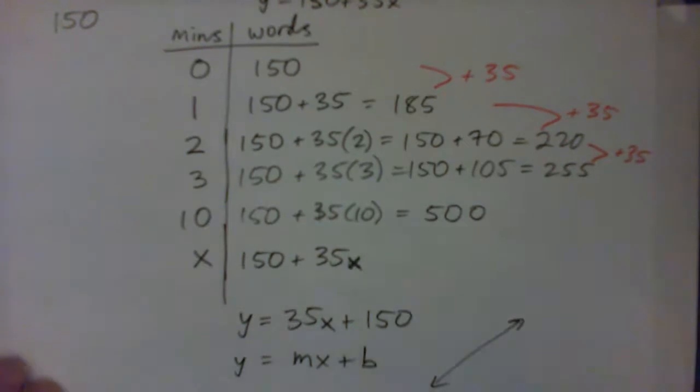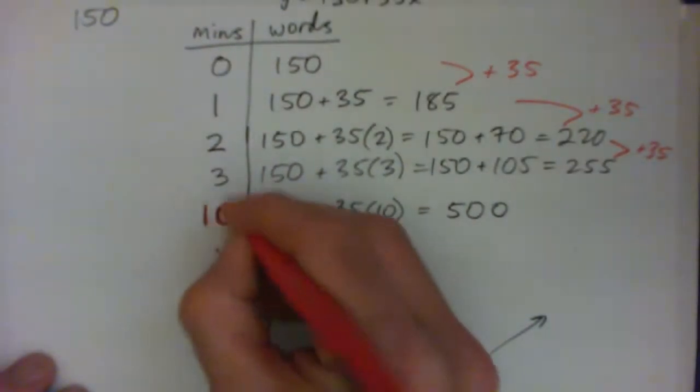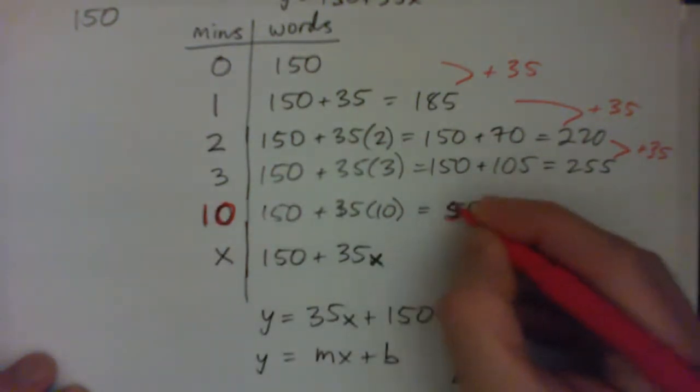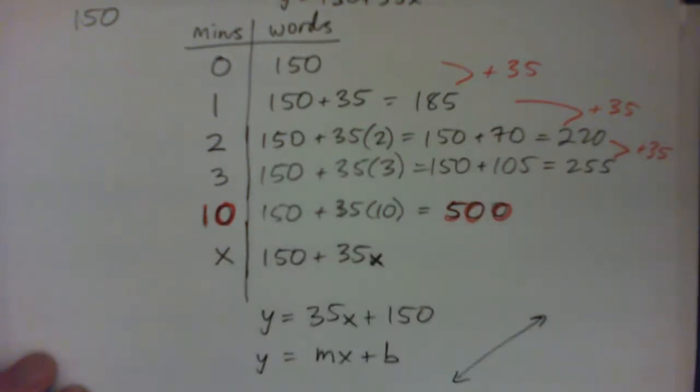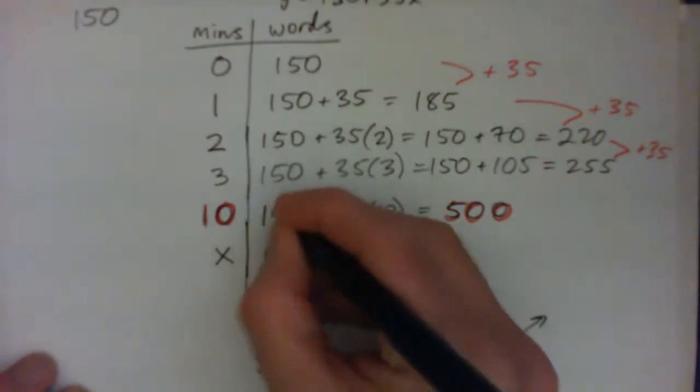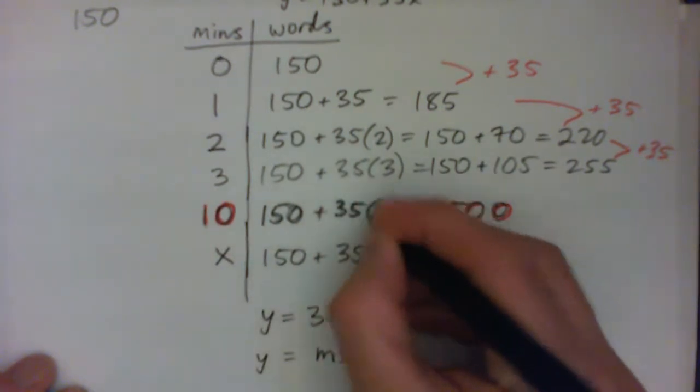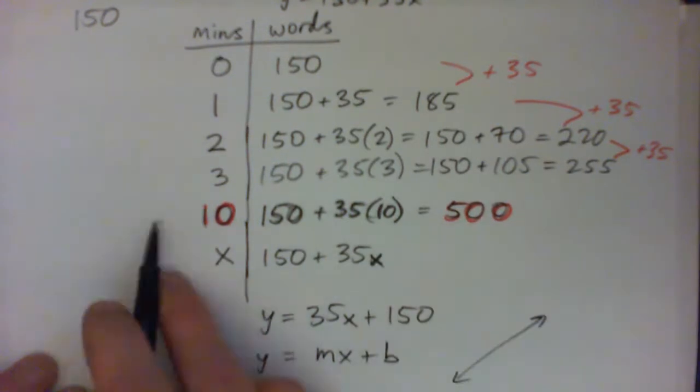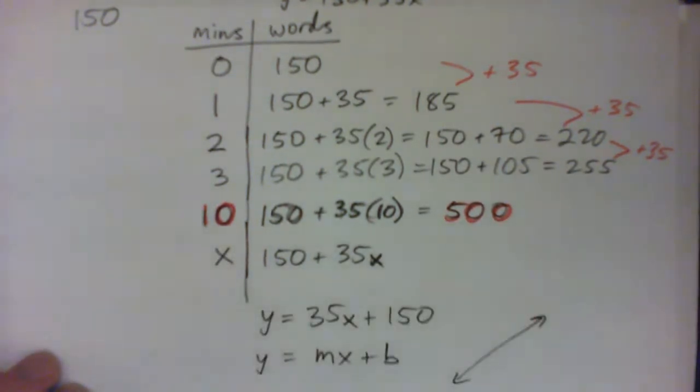You got it. So on your quiz, you guys, you might see, okay, after 10 minutes typing today, how many words? 500 words is the answer, right? So after 10 minutes, because it's 150 from yesterday, plus 35 times 10, which is 350, right? And that makes 500 words. So after 10 minutes of typing today, you get 500 words, okay? Okay, so let's go.